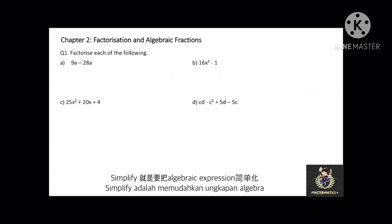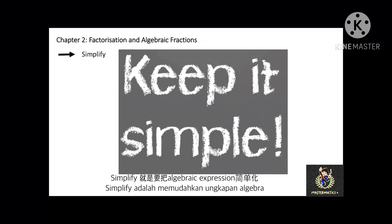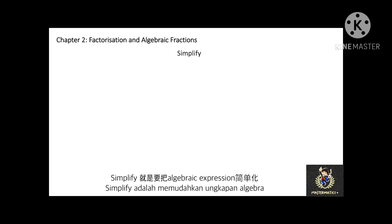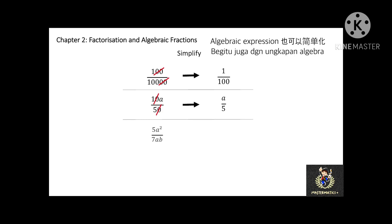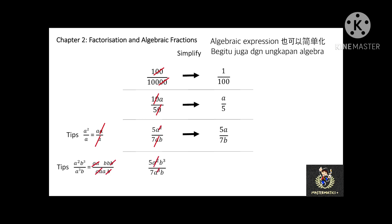The last topic of this chapter is simplification. An algebraic fraction can be simplified by elimination if both the numerator and denominator have common factors. For example: 100 over 10,000 simplifies to 1 over 100; 10a over 50 simplifies to a over 5; 5a squared over 7ab simplifies to 5a over 7b; and 5a squared b cubed over 7a cubed b simplifies to 5b squared over 7a. All simplifications are done by eliminating common factors.